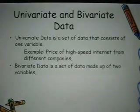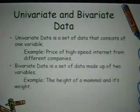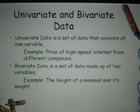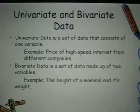The price is the only variable that will be collected here. Bivariate data is a set of data made up of two variables. For example, the height of a mammal and its weight — the height and weight are the two different variables.